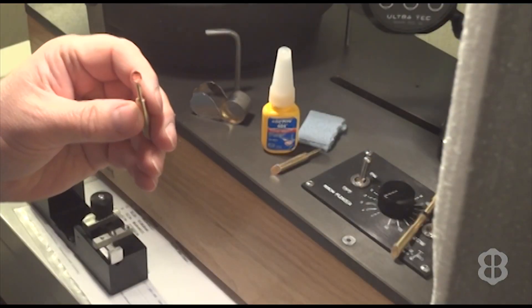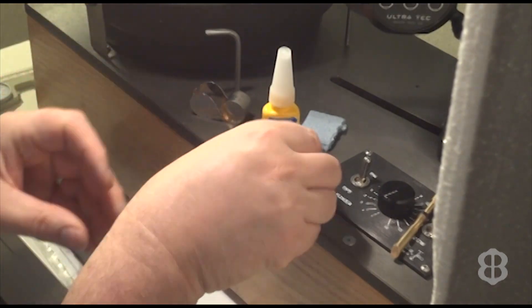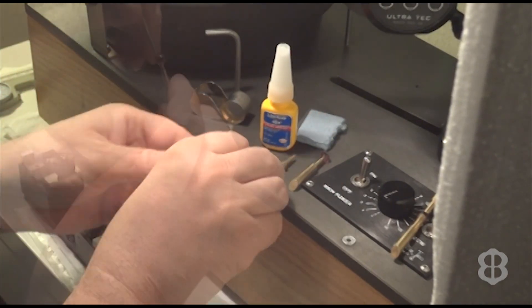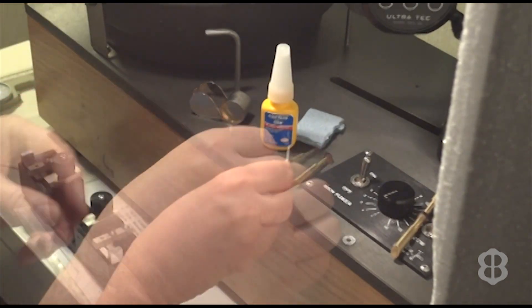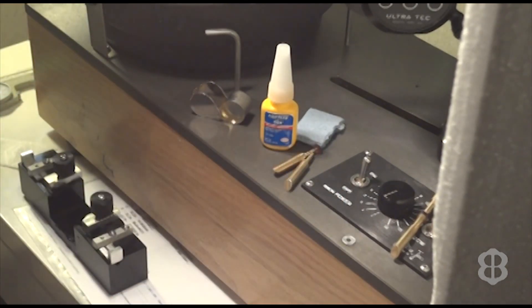So the way we transfer our Imperial Zircon is we get the dop with a concave, the cone shape, which is going to fit right in there. Clean both the dop and the stone with a little bit of alcohol.